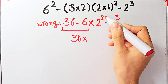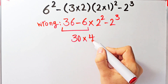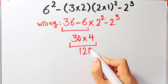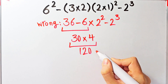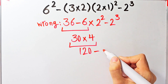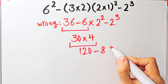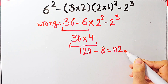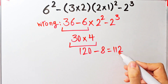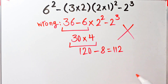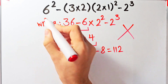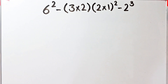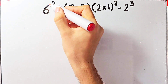Thirty-six minus six equals thirty, thirty times two to the power of two which equals four, equals one hundred and twenty. And one hundred and twenty minus two to the power of three which equals eight, equals one hundred and twelve. They say the final answer equals one hundred and twelve, but this answer is definitely wrong.